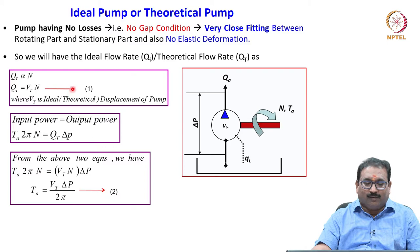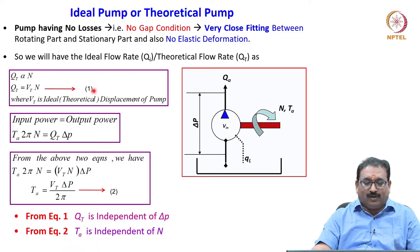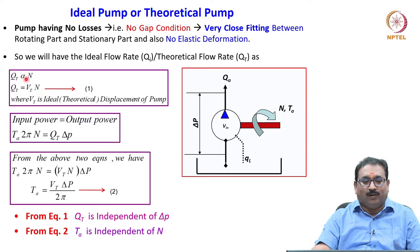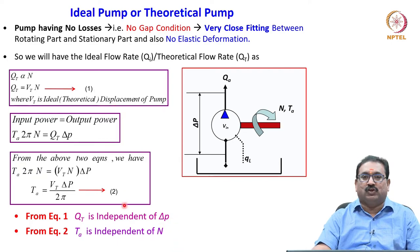Please note from equation 1 and equation 2: the theoretical flow is independent of delta P — there is no delta P term. Similarly, from equation 2, the actual torque TA is independent of N. This is an important observation from equations 1 and 2.